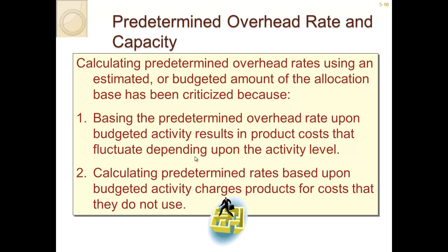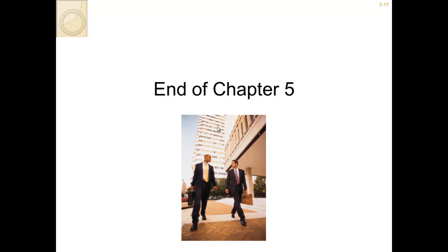When calculating your predetermined overhead rate, you're using estimated or budgeted amounts. This approach has been criticized because basing the rate on budgeted activity levels causes product costs that fluctuate with activity. Also, using budgeted activity can charge products for costs they don't actually use. Sometimes people aren't very good at estimating costs and don't account for capacity or actual expenses. There are problems with the predetermined overhead rate, but it is a widely used process. The next video will cover examples of applying the predetermined overhead rate and determining over- or under-applied overhead.